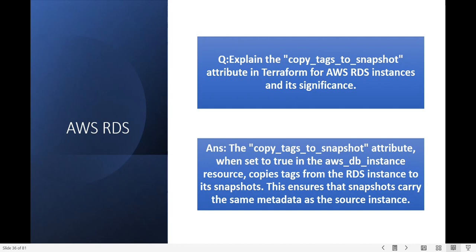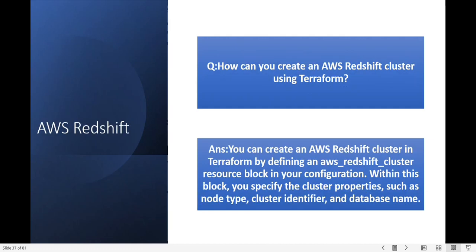Next question: how can you create an AWS Redshift cluster using Terraform? You can create an AWS Redshift cluster in Terraform by defining the aws_redshift_cluster resource block in your configuration. Within this block you can specify cluster properties such as the node type, cluster identifier, and database name.